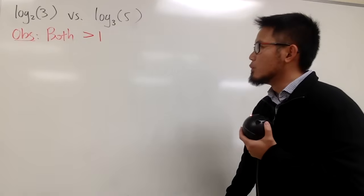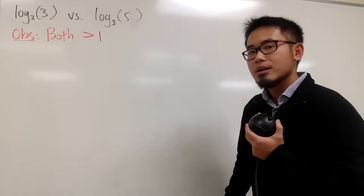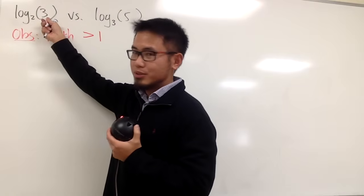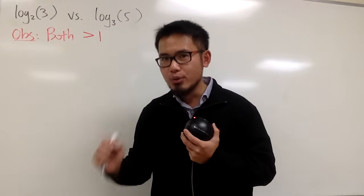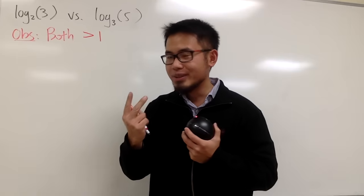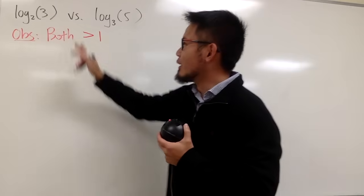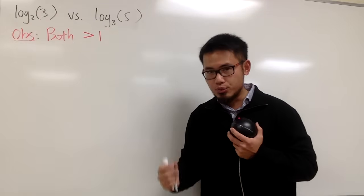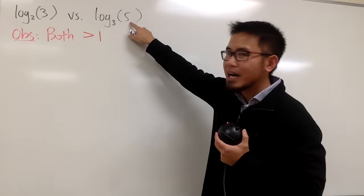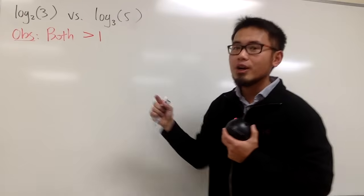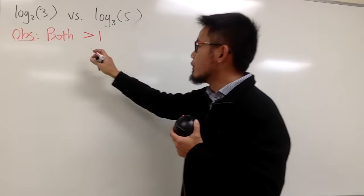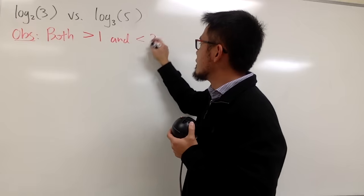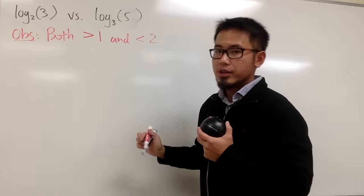What else can we say, though? In fact, they are both less than 2. Because we have this is just a 3. If we have log base 2 of 4, that's exactly 2. But 3 is less than 4. So this is less than 2. Likewise, if this was a 9, then log base 3 of 9 is 2. But since this is a 5, so this whole thing right here will be less than 2. So I will just write this down for you guys. Both of them are greater than 1. In the meantime, they are less than 2. And let me just do a quick demonstration on this right here.